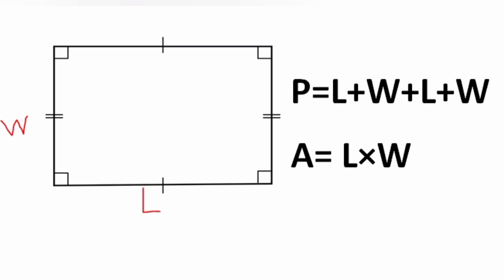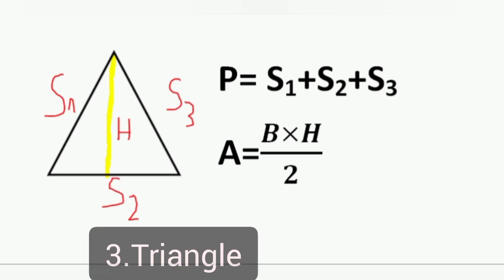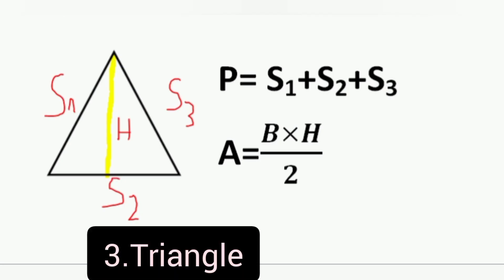Number 3: Triangle. Triangle is a polygon with 3 sides. Perimeter of triangle is equal to side 1 plus side 2 plus side 3. Area of triangle is equal to base times height divided by 2.